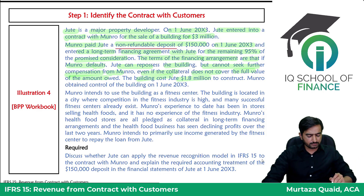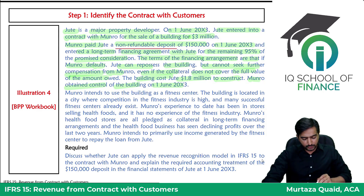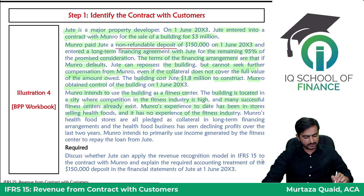The building cost Jute 1.8 million dollars to construct. Munro obtained control of the building on 1st June 2013. Munro intends to use the building as a fitness center. The building is located in a city where competition in the fitness industry is high and many successful fitness centers already exist. Munro's experience to date has been in stores selling healthy foods and it has no experience in the fitness industry. Munro's healthful stores are all pledged as collateral in long-term financing agreements and the healthful business has been declining in profits over the last two years.